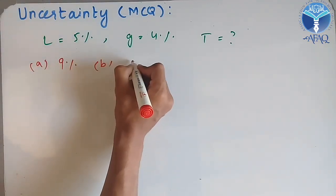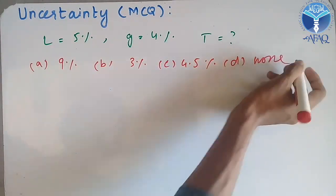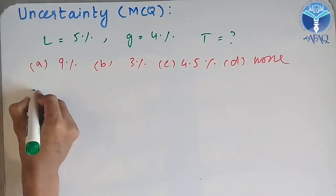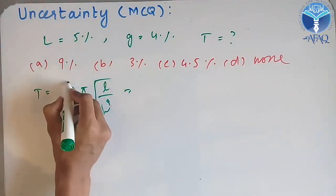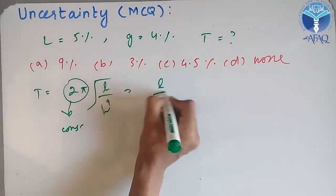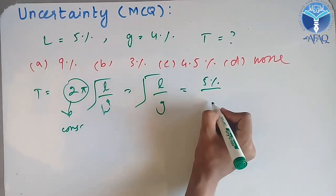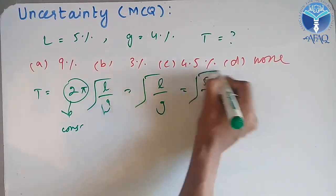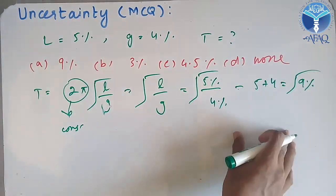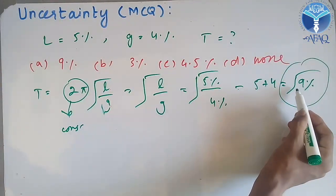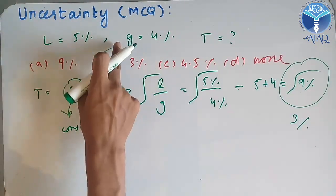Let's solve this. Time period is equal to 2π √(L/g). We know that 2π is a constant, so we can neglect the constant. For L over g under root, L has 5% uncertainty and g has 4% uncertainty. According to the rule, that will be added: 5 plus 4 equals 9%. Now students get confused here about the under root. Some students mark 3% thinking we need to take the square root, but that is also wrong.